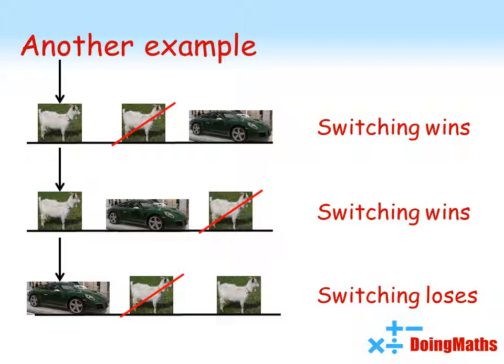So, the probability of winning the car by switching if you started on door one is two-thirds. Looking at the pictures, you can see quite quickly that the same thing would happen if you originally chose doors two or three. Two of the scenarios would lead to wins. One would lead to a loss. So, giving you an overall probability of winning by switching of two-thirds.